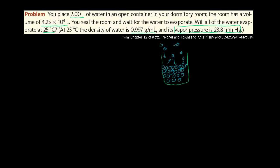As more and more water molecules vaporize and go into the gaseous state, more and more will also create downward pressure and collide with the surface of the water. The pressure at which the liquid and vapor states are in equilibrium is the vapor pressure. They're telling us right now it is 23.8 millimeters of mercury.